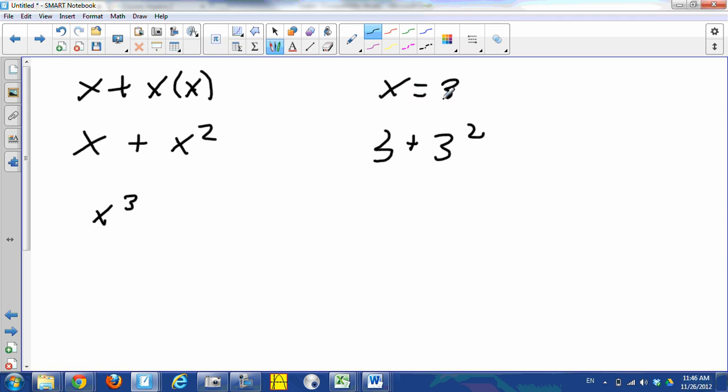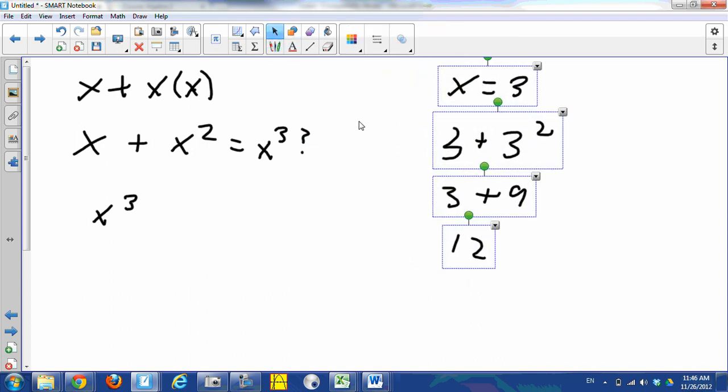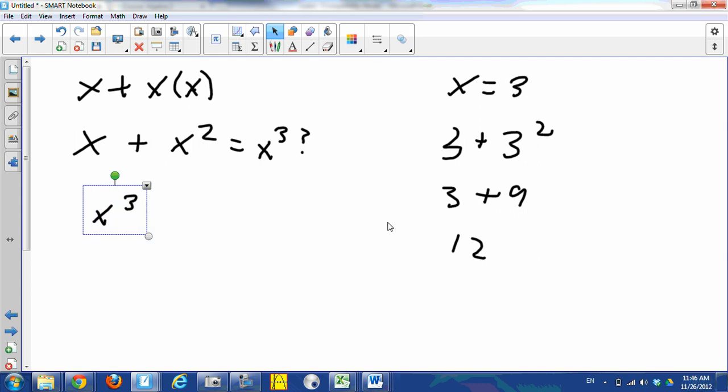3 + 3² is 3 + 9, or let me write down here 3 + 9, which is 12. That's not the same. We're asking ourselves: is this equal to x³? And we're going to see very clearly that it doesn't. Well, let's look at x³. x³ would be 3³, 3 to the third power, 3 times 3 times 3. That's 27. 27 and 12 are clearly not the same, so the answer is it's definitely not x³.